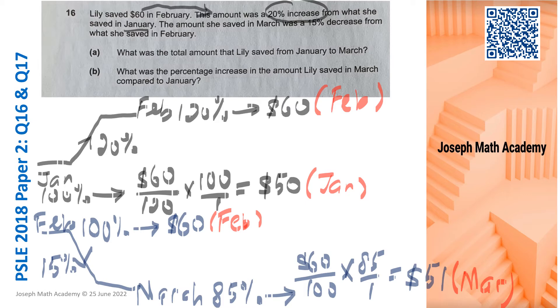From these two line graphs, we should be able to answer question A. Question A, what was the total amount that Lily saved from January to February to March? So we want to find out all the three months savings. So in January, she saved $50. In February, $60. In March, $51. So the three months, she saved a total of 161. So part A is done.